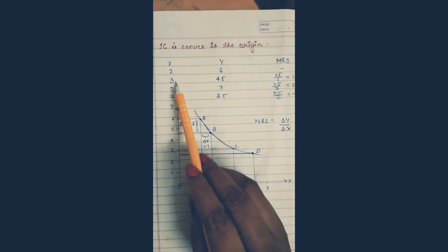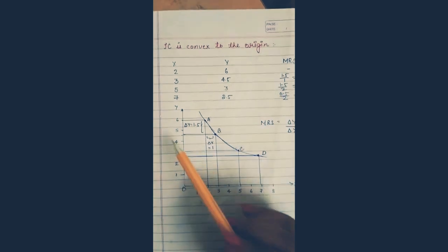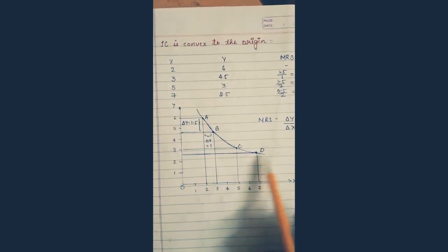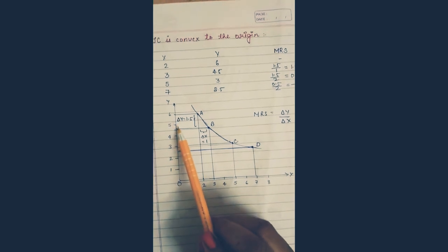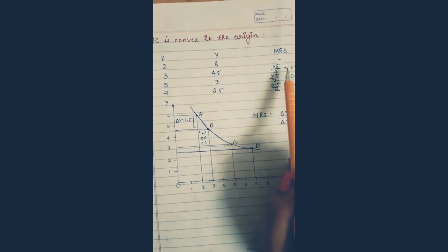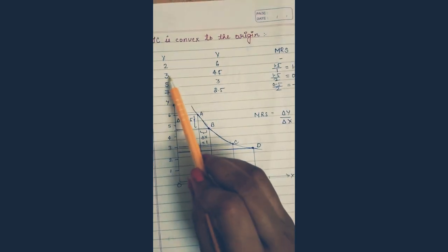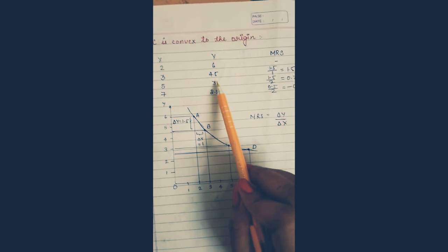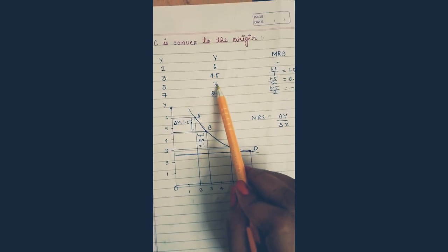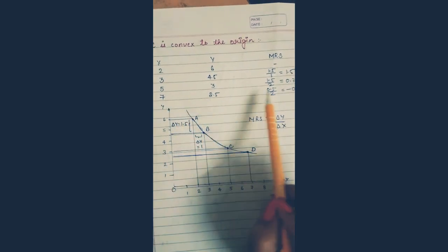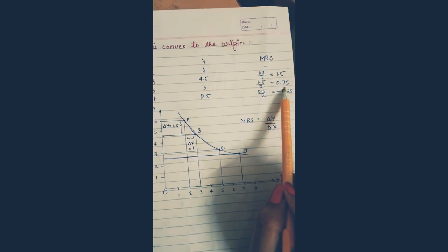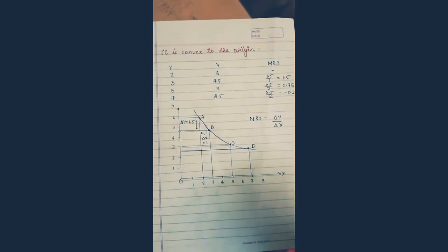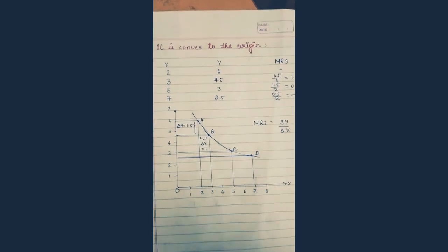Looking at the diagram: X values are two, three, five, seven and Y values are six, four point five, three, two point five — marked on the negatively sloped curve. Δy from six to four point five is one point five; Δx from two to three is one — so MRS equals one point five. Next, Δy from four point five to three is one point five; Δx from three to five is two — so MRS equals one point five divided by two, which is 0.75. This is how MRS is calculated using Δy upon Δx.